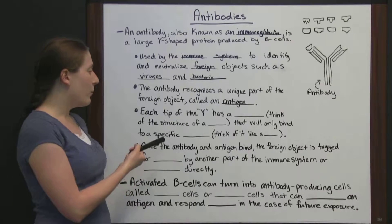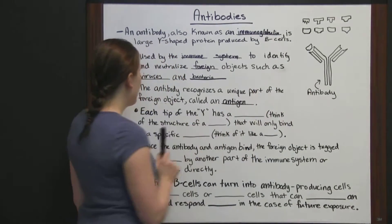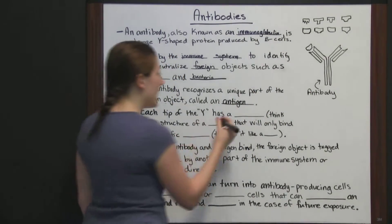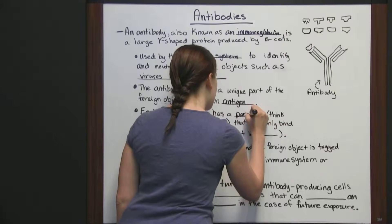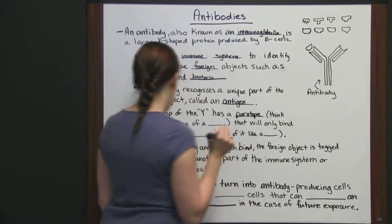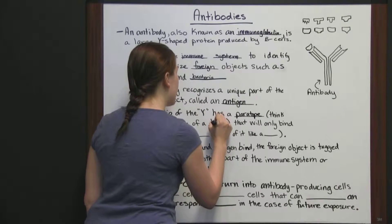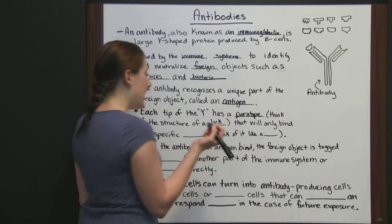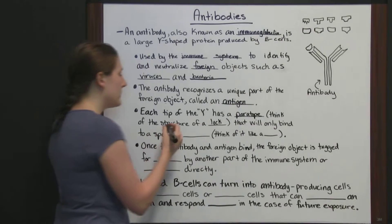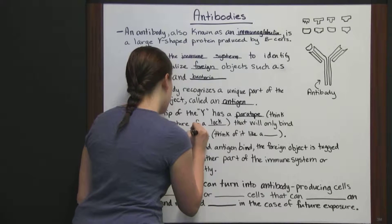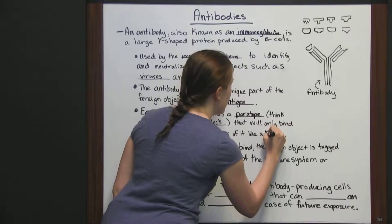Each tip of the Y — remember, an antibody is a Y-shaped protein — has a paratope. Think of the structure of a lock for a paratope. Each paratope will only bind to a specific epitope, and think of it like a key.